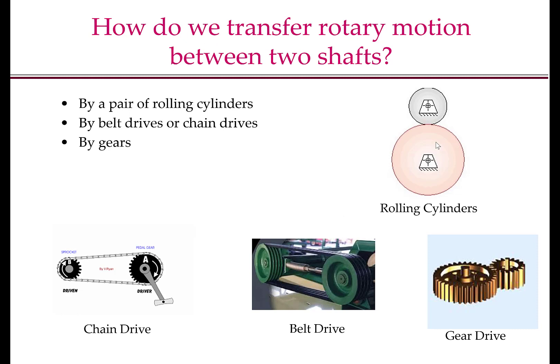The first question that comes up is how do we transfer rotary motion between two shafts. There are multiple ways of doing this: we can use a pair of rolling cylinders, belt drives, chain drives, or gears. The kinematics of motion transfer in all these different possibilities is similar to the kinematics of rolling cylinders.